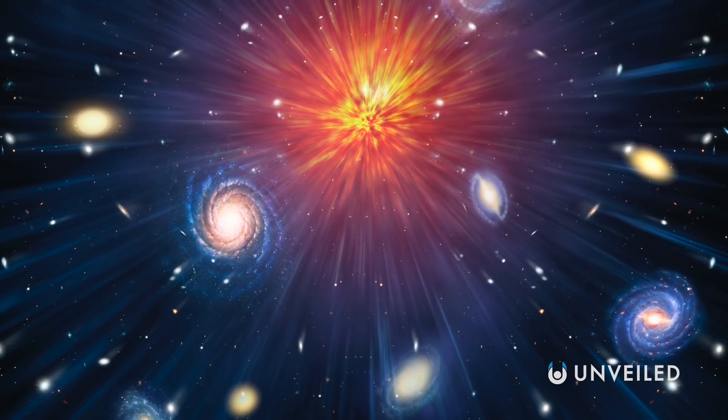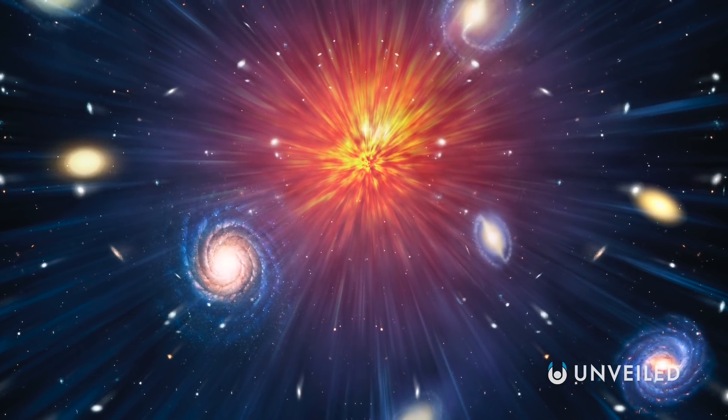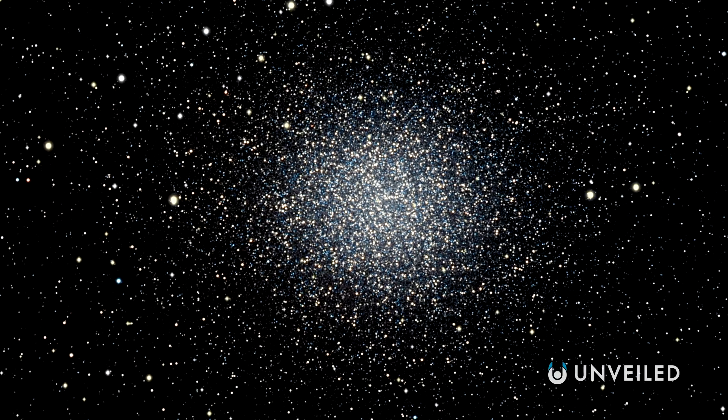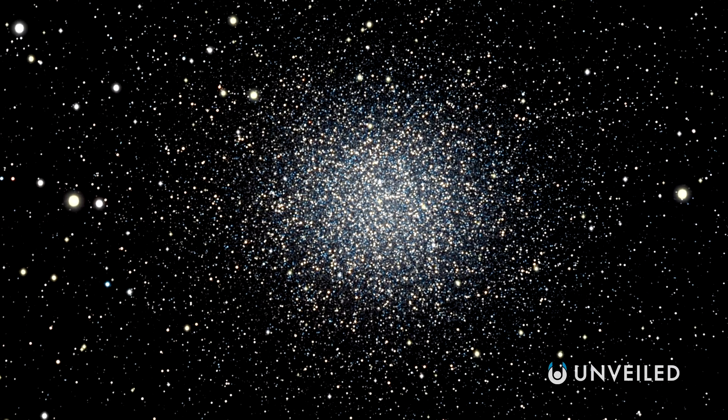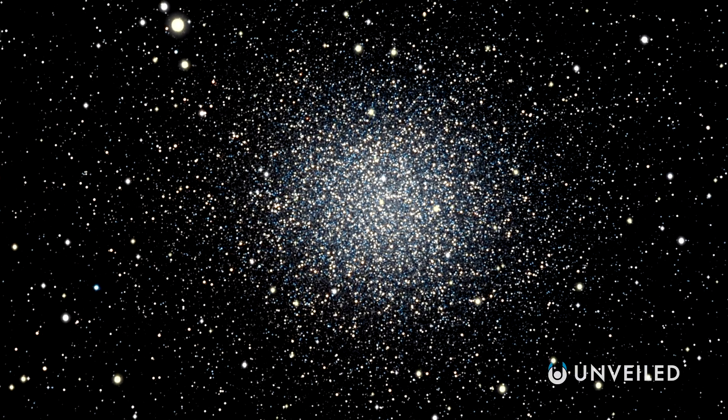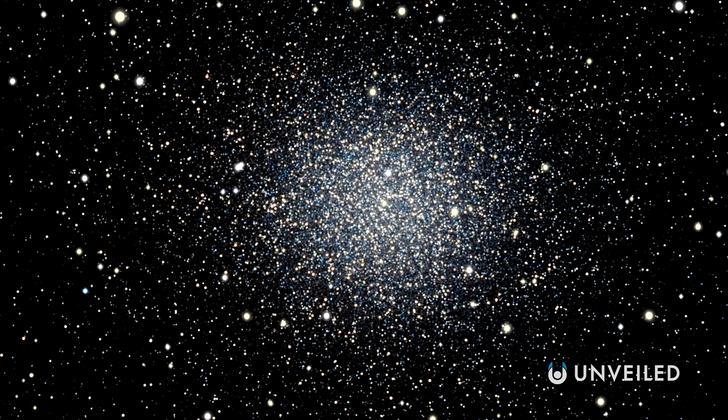It takes some fast-forwarding if we want to see what happens next. The universe continues to expand and cool, but the temperature has to drop pretty drastically for the next phase. But after about 2,500 years, matter finally starts to dominate the universe. The next interesting thing that happens takes another 322,000 years or so. At this point, the temperature has dropped sufficiently, to about 3,000 Kelvin.